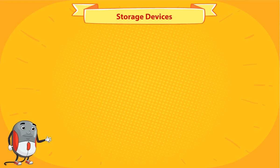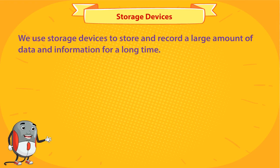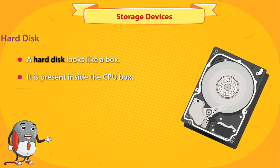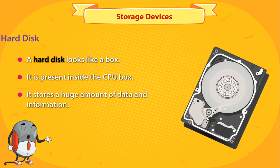Storage Devices. We use storage devices to store and record a large amount of data and information for a long time. Hard Disk: A hard disk looks like a box. It is present inside the CPU box. It stores a huge amount of data and information.